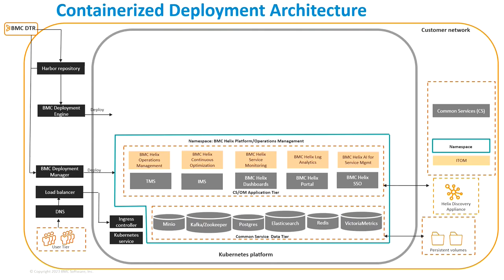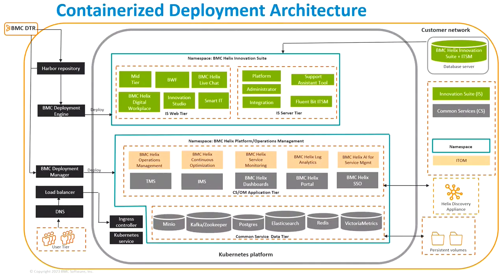All of these pieces are installed within a single namespace. A Kubernetes namespace is a logical segregation of application pods, and all of these components fit within a single namespace. Once those components are installed, the next step is to create a namespace for the Helix Innovation Suite or ITSM. The various IS and ITSM component pods are installed within that — separate pods for the mid-tier, Smart IT, the platform, and various other integration and assistant pods. They communicate with pods running in the Helix platform namespace for things like single sign-on, dashboards, and reporting.